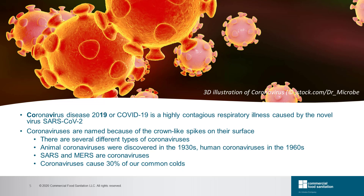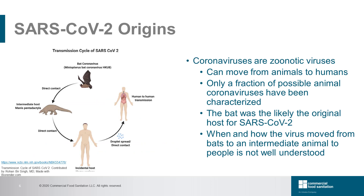SARS-CoV-2 is an enveloped single-strand RNA virus consisting of four structural proteins, named the envelope, membrane, and nucleocapsid. There is a more detailed diagram of the virus and the role these proteins play in the infection process later in the presentation. Coronaviruses are known to cause disease in humans, other mammals, and birds. Coronaviruses are also considered zoonotic viruses, meaning that under certain circumstances, these viruses can move from humans to animals and from animals to humans. SARS-CoV-2, SARS, and MERS are examples of coronaviruses that have moved from animals to humans. Only a small fraction of coronaviruses present in the animal community have been characterized, and scientists still have much to learn about the circumstances that drive the movement of these viruses from an animal host to a human host.